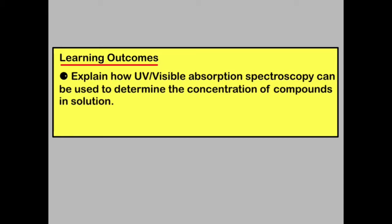So by now you should be able to explain how UV and visible absorption spectroscopy can be used to determine the concentration of compounds in a solution. Thank you.